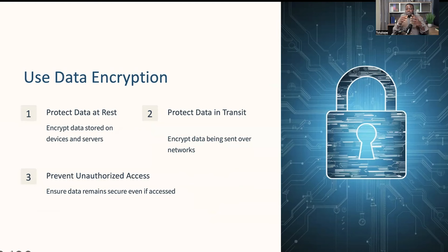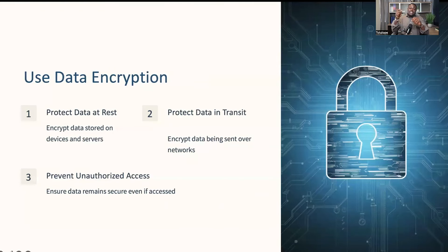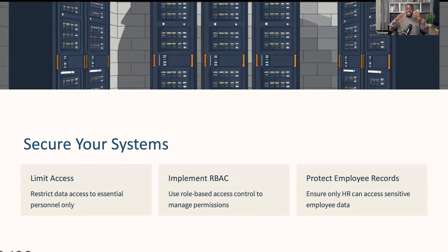Next, you want to use data encryption. Encrypting data both at rest — when it is stored — and in transit — when it is being sent — ensures that even if unauthorized individuals access the data, they won't be able to read it. For instance, encrypting emails that contain sensitive information will help protect them from being intercepted by malicious actors. Another best practice is securing your systems — this involves limiting data access to only those employees who need it to do their jobs. Implementing role-based access control is a great way to achieve this; for example, only HR personnel should have access to employee records.